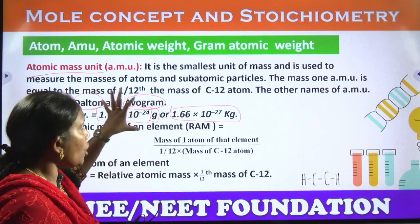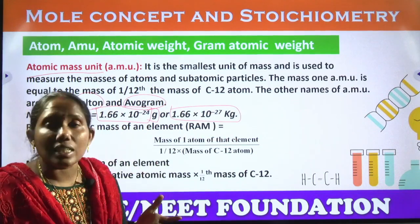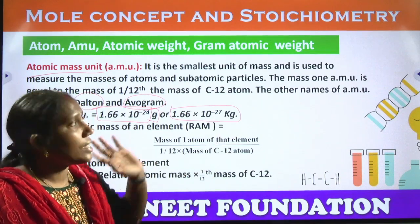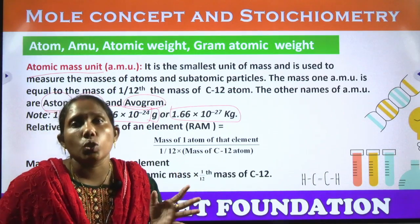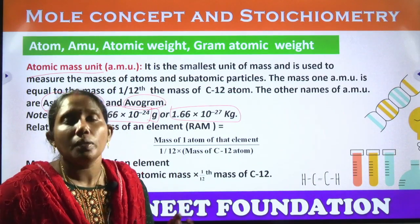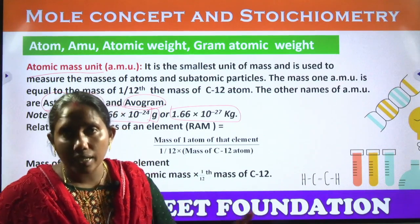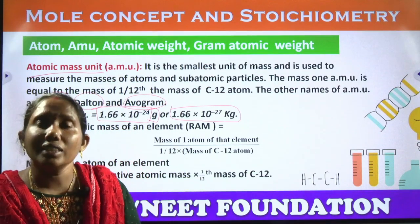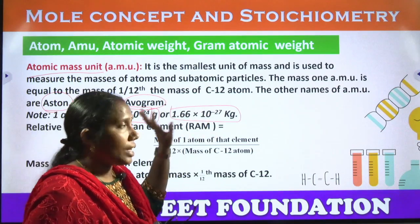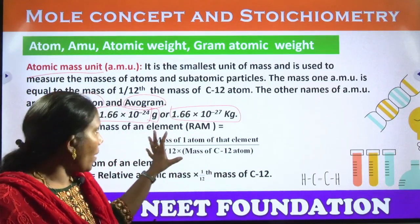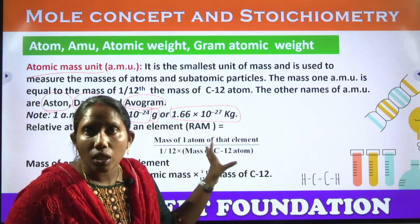One AMU is one-twelfth part of the C-12 isotope's mass. Carbon isotopes include C-6-12, C-6-13, and C-6-14 — these have the same atomic number but different mass numbers. Among these, we take the C-12 isotope. One-twelfth part of the C-12 isotope is considered as 1 AMU, which equals 1.66 × 10⁻²⁴ grams or 1.66 × 10⁻²⁷ kilograms.